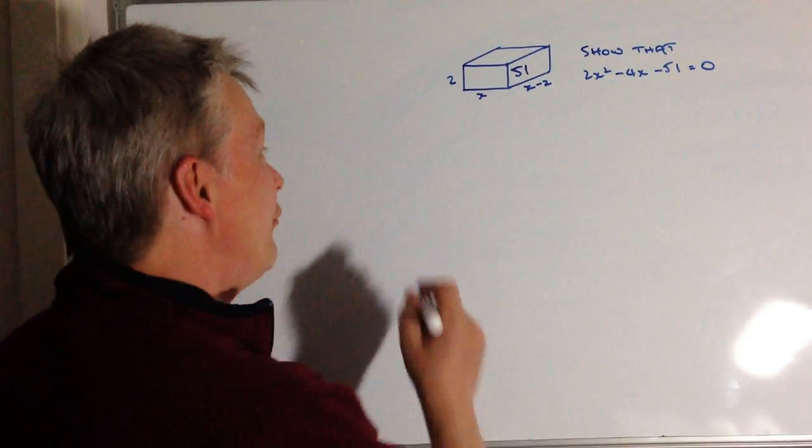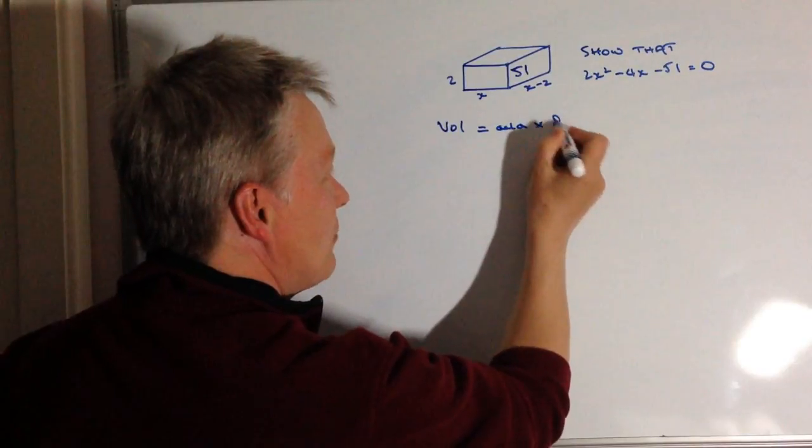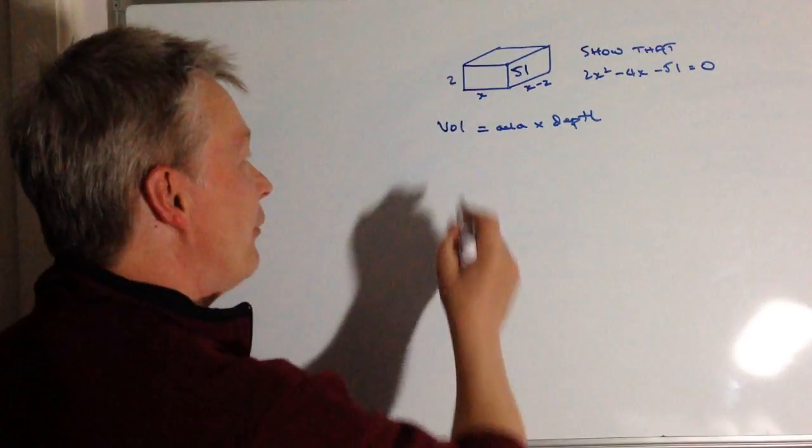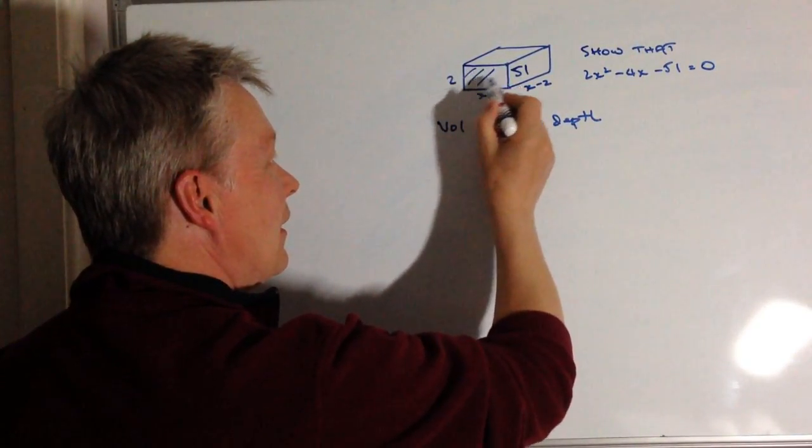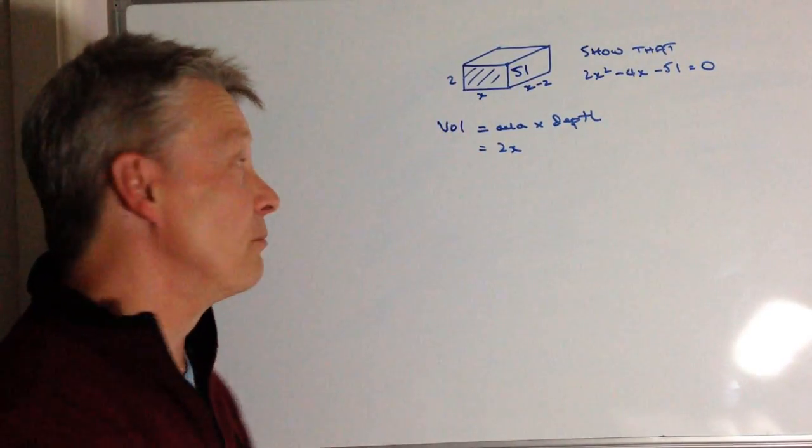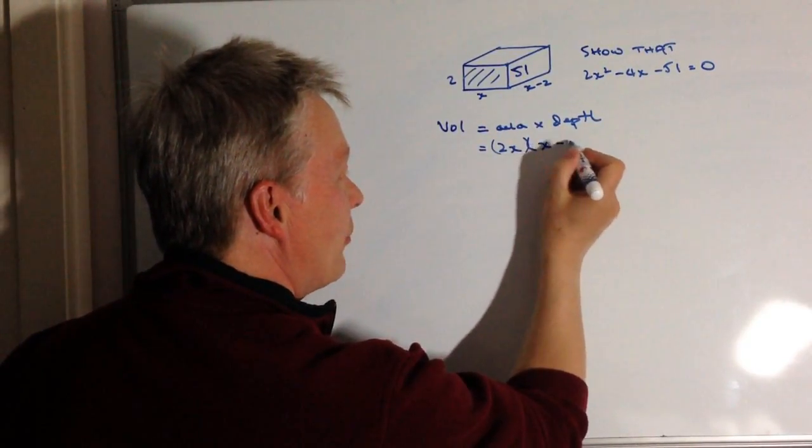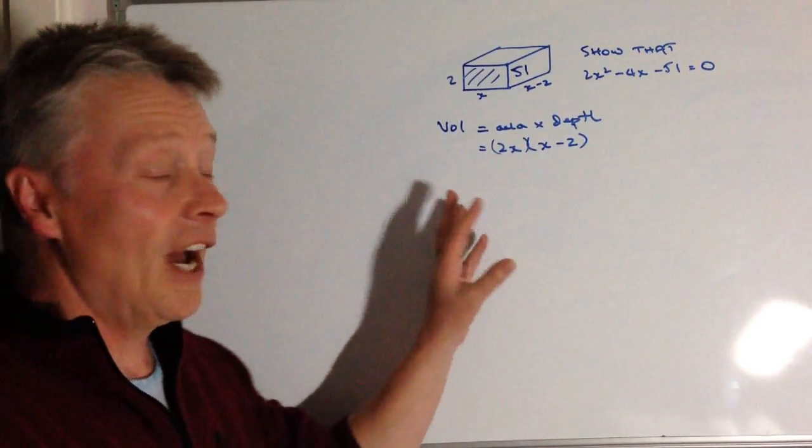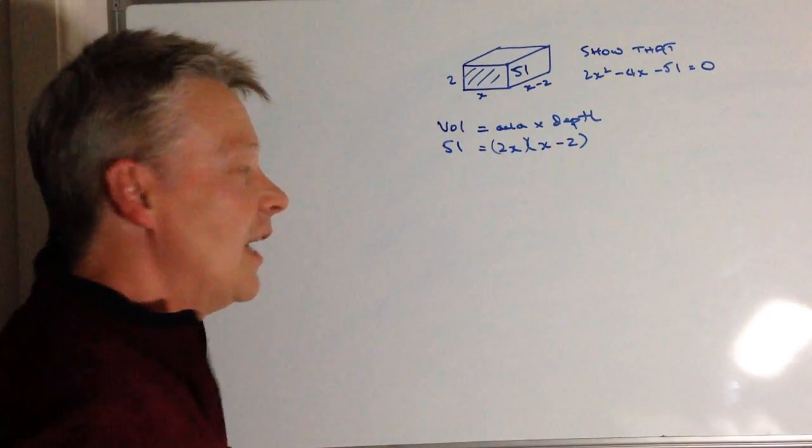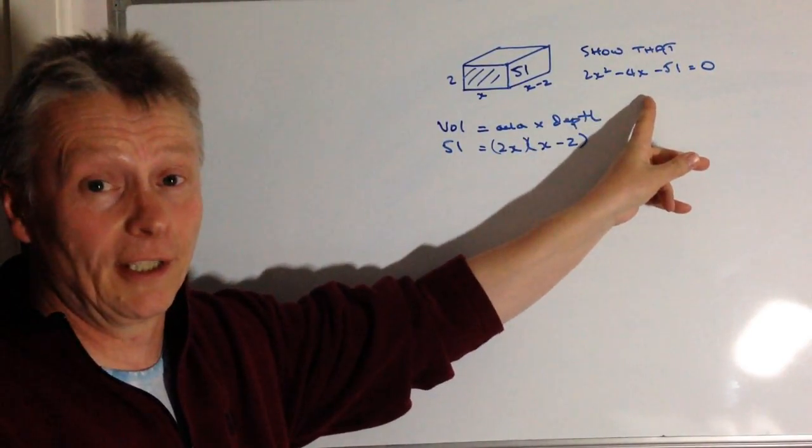As you know, the volume of anything is equal to area times the depth. So what I'm going to do is work out the area of this first little bit, which is going to be 2x or 2 times x, and then I'm going to multiply that 2x, I'm just going to put it in brackets like that, by the depth which is x minus 2. And all of that when we multiply it out is going to be equal to 51, and then it's just really a case of manipulating this in order to make it look like that.